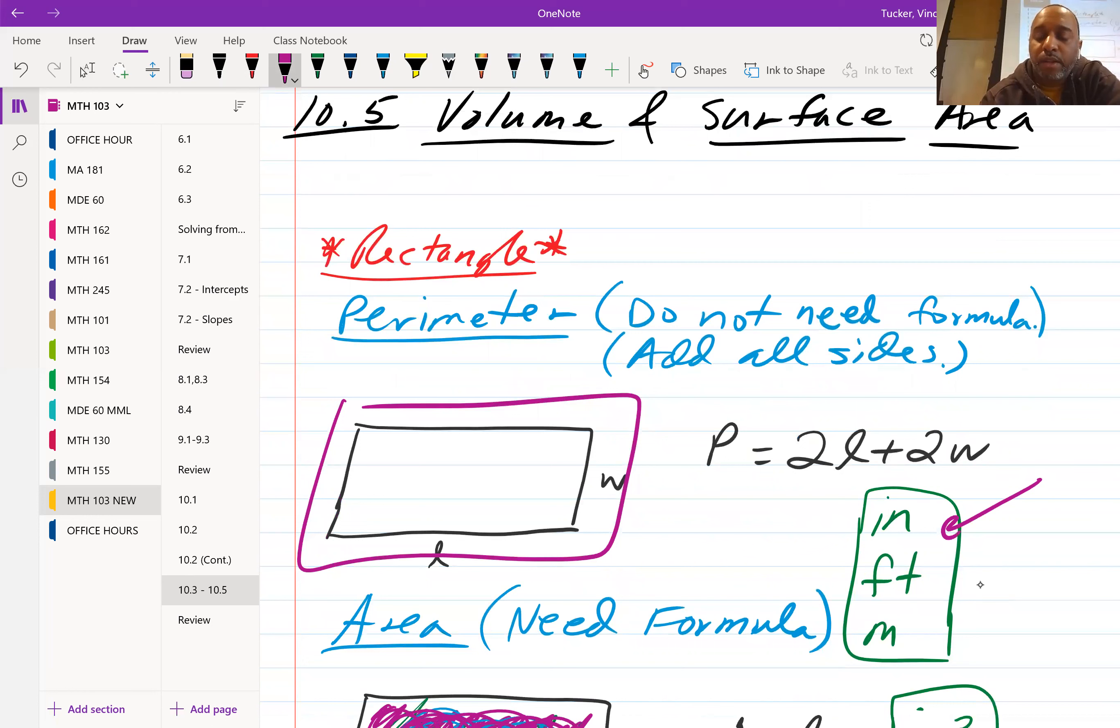And then when you finish calculating the perimeter, it will be in your regular measurement. So if you were inches, it will stay inches, if feet it will stay feet, if meters it will stay meters. Any questions on perimeter? We're going to do some problems with it, but just comparing all three first.